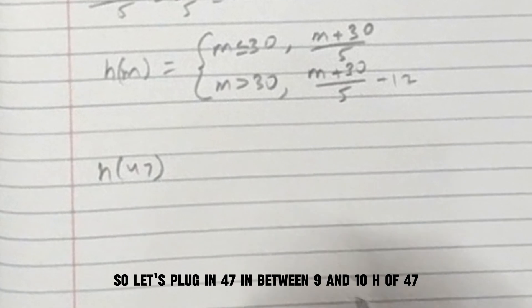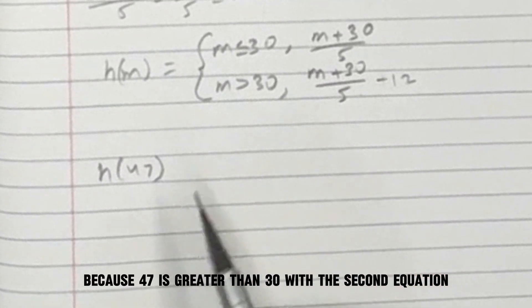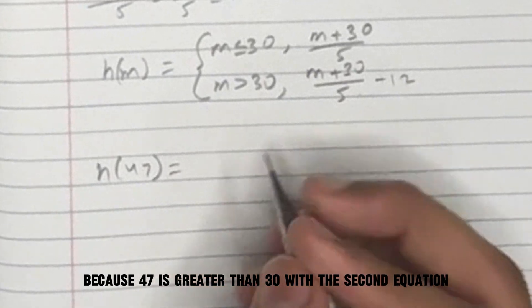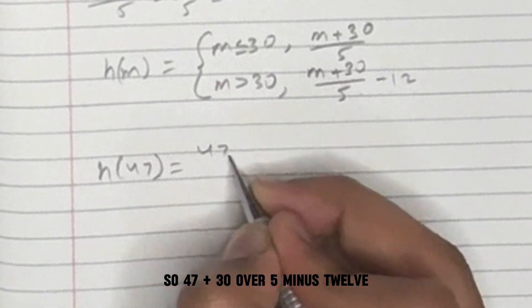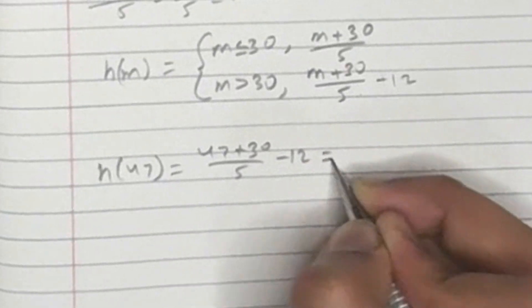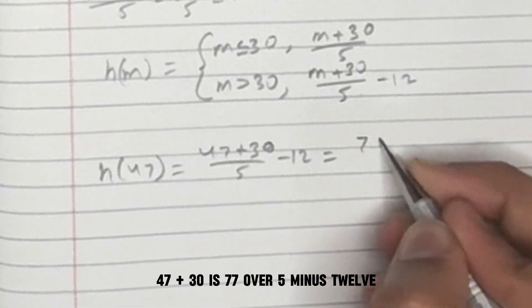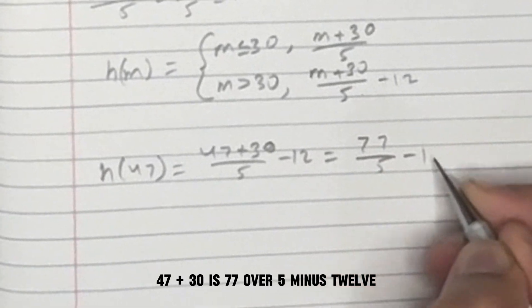H of 47. Because 47 is greater than 30, we use the second equation. So 47 plus 30 over 5 minus 12. 47 plus 30 is 77 over 5 minus 12.